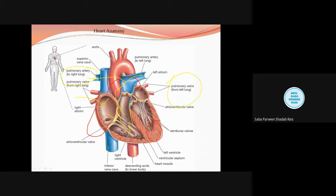The oxygenated blood is received by the left atrium and further goes to the left ventricle. From the left ventricle the blood goes to the body through the aorta, entering the systemic circulation. The left side of the heart has the mitral valve and the right side has the tricuspid valve.